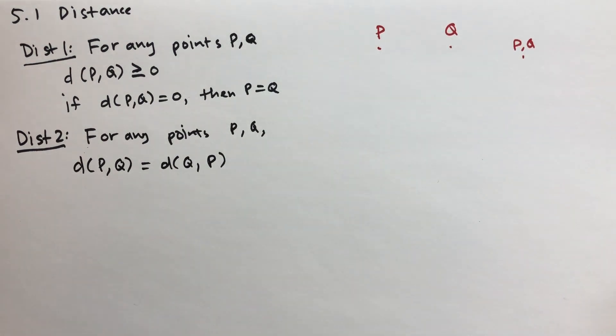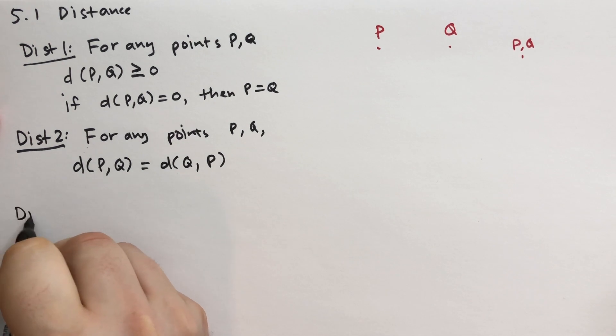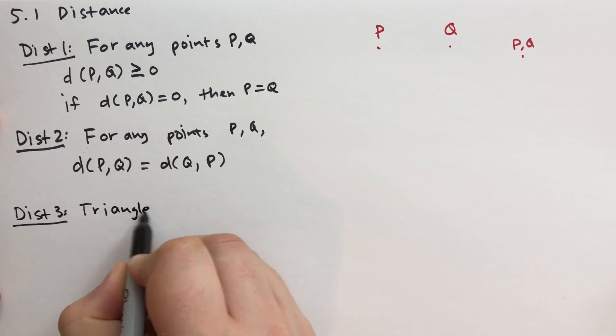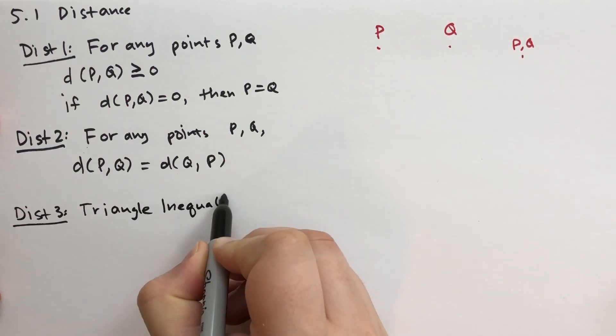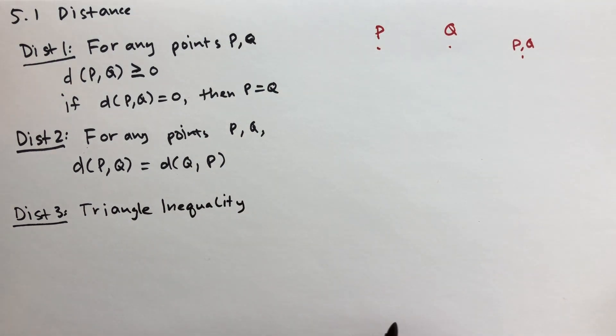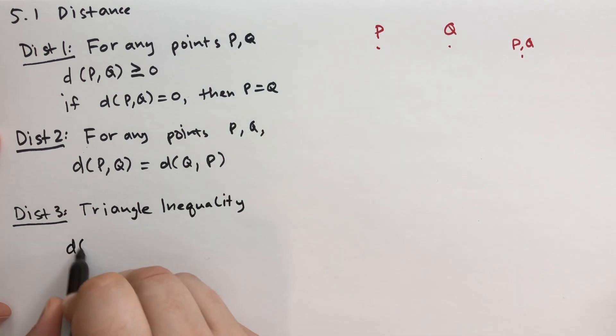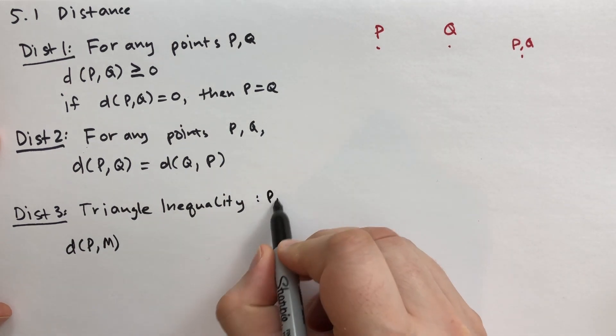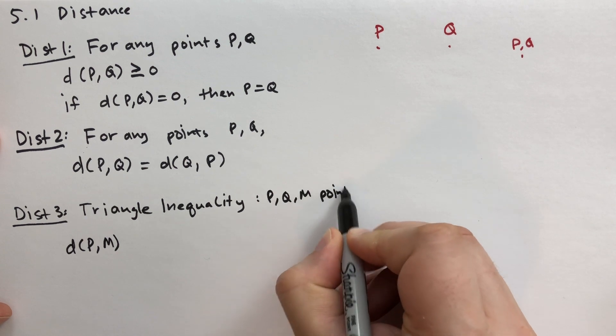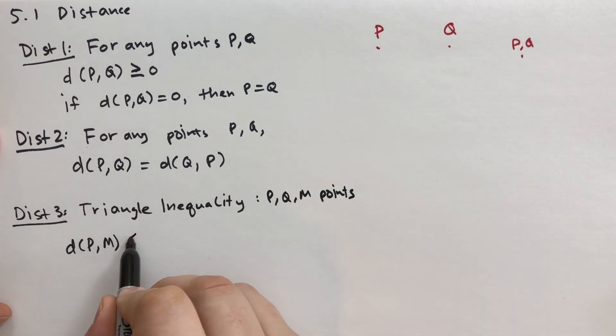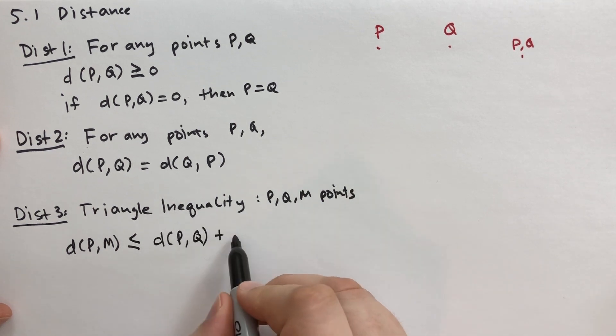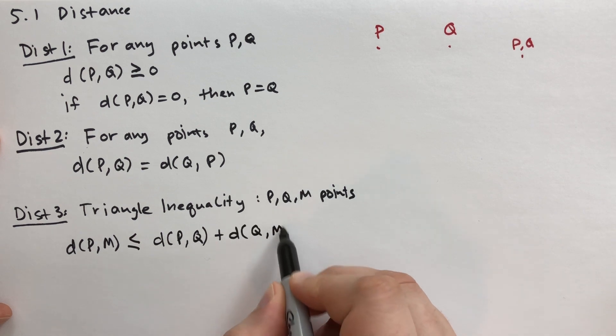And the last one he calls Dist 3, popularly known as the triangle inequality. I see this pop up every once in a while in advanced mathematics and advanced physics. What this says is the distance between two points P and M, well P, Q, M be different points. The distance between points P, Q and M is less than or equal to the distance from point P to some other point Q, adding the distance from point Q to the point M.